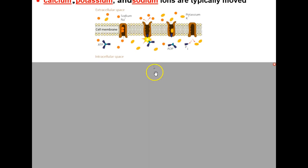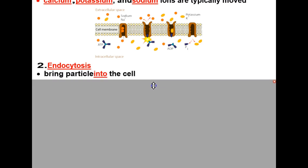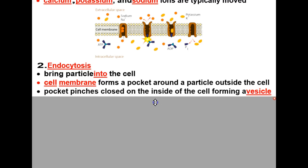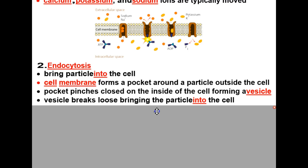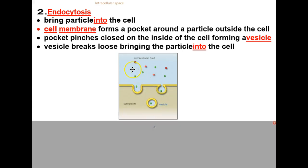The next type of active transport is endocytosis. 'Endo' is a prefix that means in, so this is bringing particles into the cell. The cell membrane forms a pocket around a particle outside the cell; the pocket pinches closed on the inside forming a vesicle, and the vesicle breaks loose, bringing the particle into the cell. A diagram shows green particles outside triggering pocket formation that pinches off and moves inside the cell.